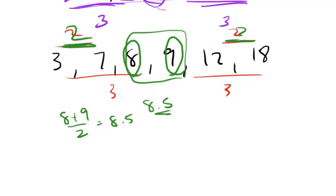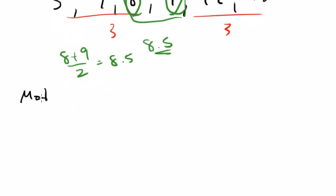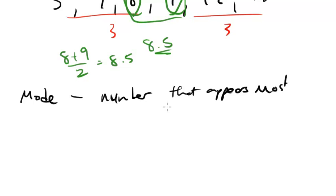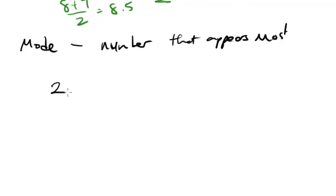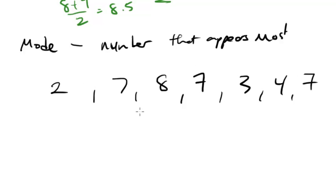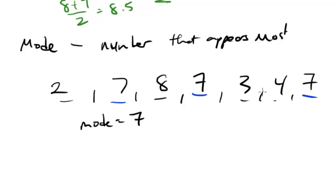Mode is even more straightforward than the median. The mode is the number, or element, in the list that appears the most. So let's say we had a list like this: 2, 7, 8, 7, 3, 4, 7. The mode here is 7, because there are three 7s — that's the one that appears the most. All other numbers appear only once.